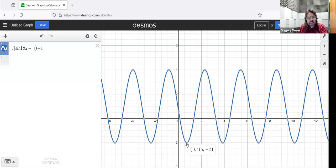So now the minimum is negative two, the maximum is positive four. The distance between them is six, so the amplitude should be half of six. The amplitude should be three, just as we see over there.